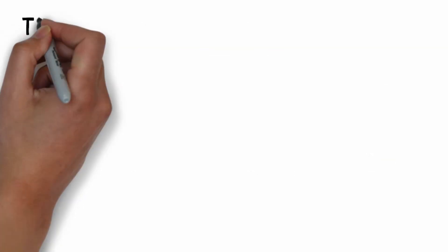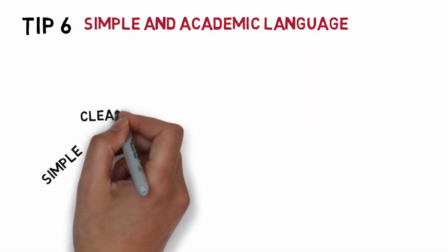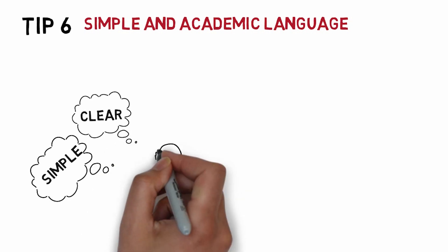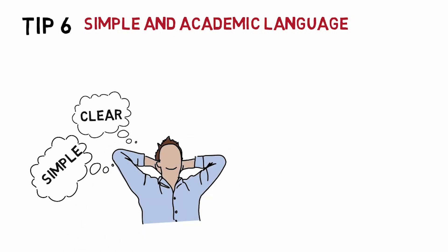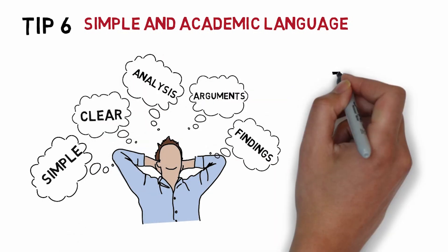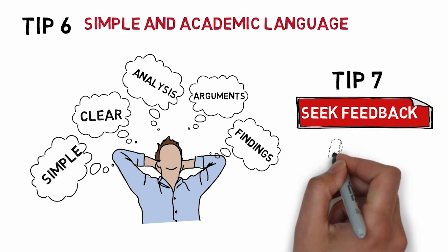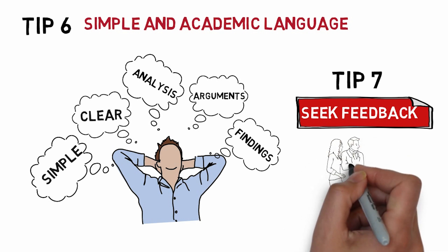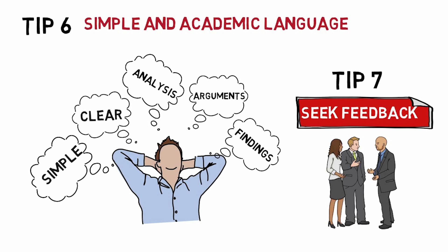One very important tip is to use simple and academic language. A simple and clear writing style is good enough, and what is crucial to reviewers and academic audiences are rigorous analysis and well-developed arguments and findings. Before submission, don't forget to seek feedback from your supervisors, language teachers, or peers who are good in academic writing. You can also involve a senior researcher in reviewing your draft to increase the chances of your submission.